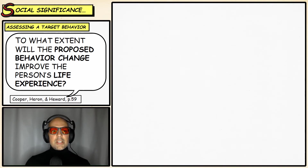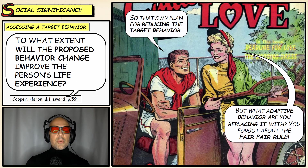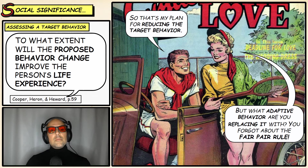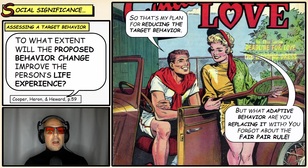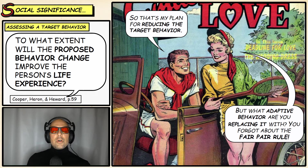More considerations for the social significance of a behavior: when targeting a behavior for reduction or elimination, one important thing to consider is what adaptive behavior you are going to replace it with. If we are trying to reduce harmful attention-seeking behaviors, we need to ask ourselves what beneficial attention-seeking behaviors are going to replace them. This is known as the fair pair rule — when we reduce a particular behavior, we pair it with another behavior that is beneficial and adaptive.